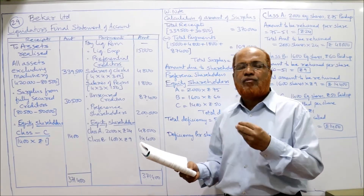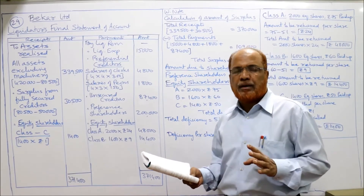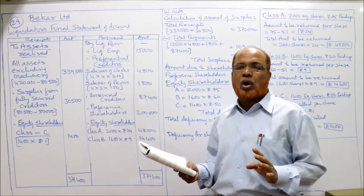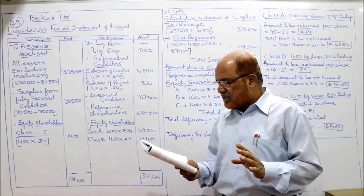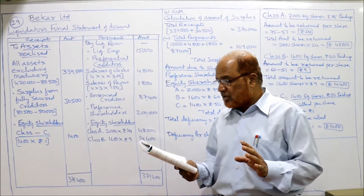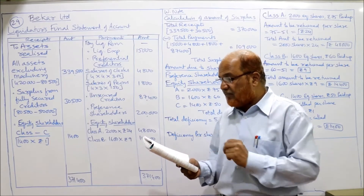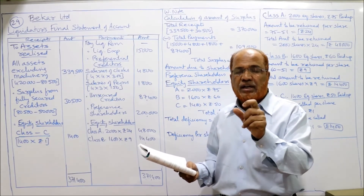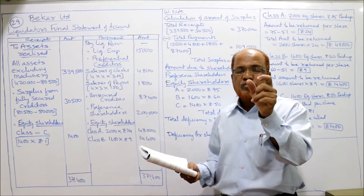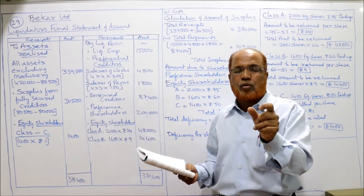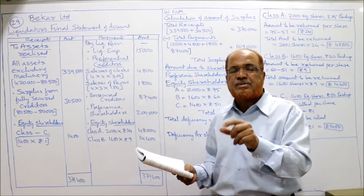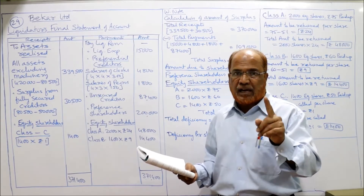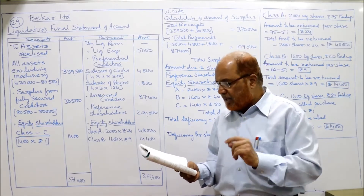So we have preference share capital of rupees two lakh, and three classes of equity shares — Class A, Class B and Class C. For Class A, the face value is 100 rupees but the company has called up 75 and the shareholders have paid 75. Class B is 60 paid up and Class C is 50 paid up.